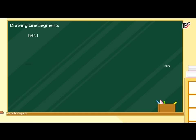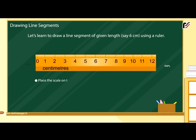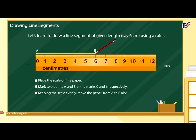Drawing line segments: Let's learn to draw a line segment of given length, say 6 centimeters, using a ruler. Place the scale on the paper. Mark two points A and B at the marks 0 and 6 respectively. Keeping the scale evenly, move the pencil from A to B along the edge of the scale. The length of the line segment is 6 centimeters.